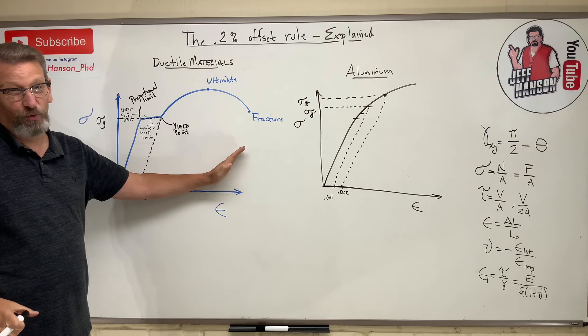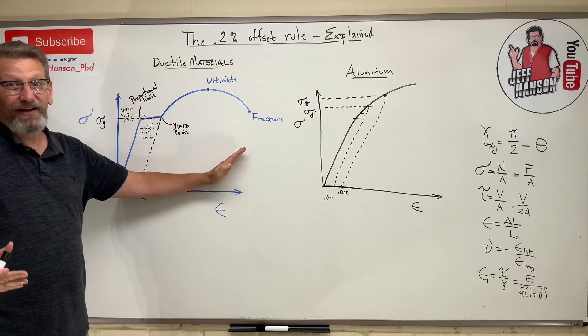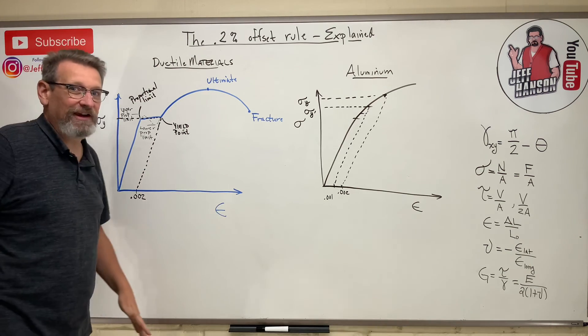So I hope that kind of explains what the 0.2% offset rule is and what it means. I hope it helps, and I'll see you in the next video.